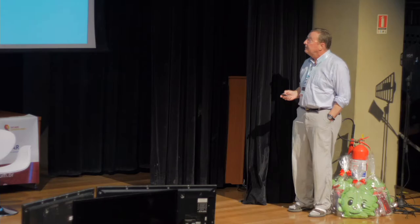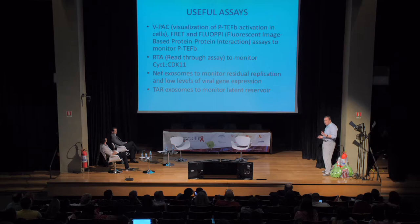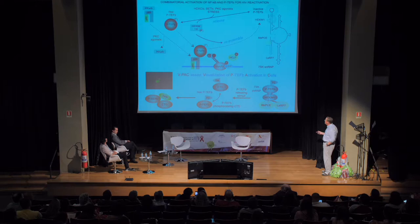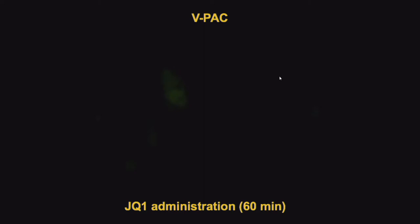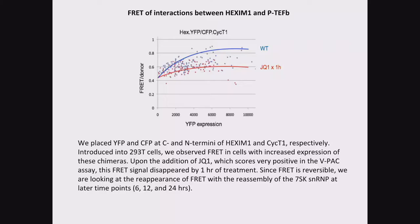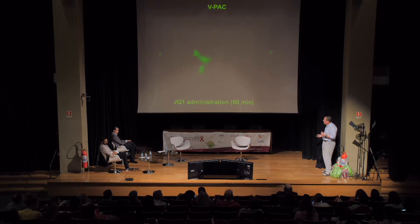We have some very useful assays to assay all of these transcription factors for drug development for anti-HIV or HIV cure approaches. We have an assay for the release of P-TEFb from 7SK, which we call the visualization of P-TEFb activation in cell. You administer JQ1 to cells, and within 60 minutes or less you see that all the P-TEFb has been released from 7SK snRNP. You can test all the drugs — HDAC inhibitors, BET-bromodomain inhibitors, azacitidine — they all work by this mechanism. You can actually do high-throughput screening of new compounds that will release P-TEFb from the inactive form.